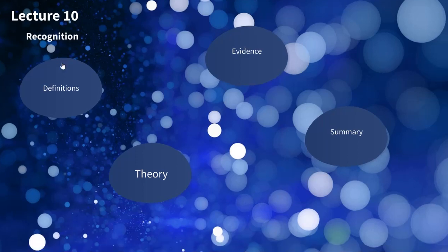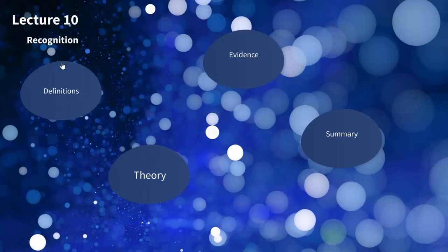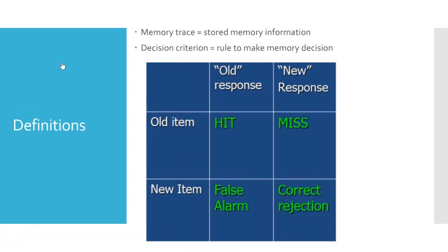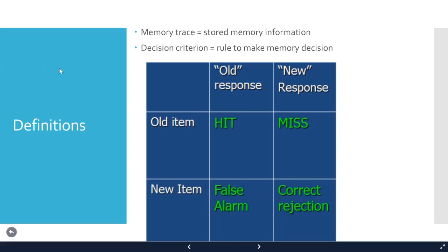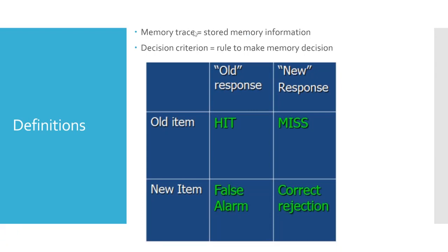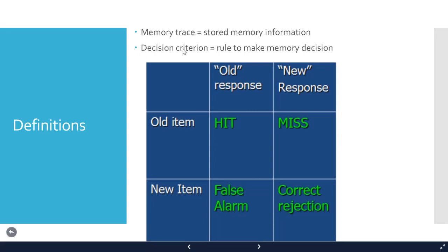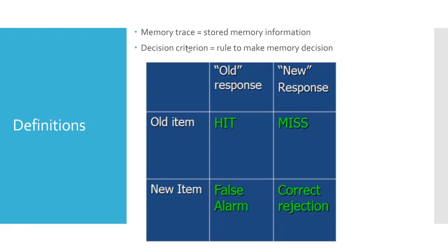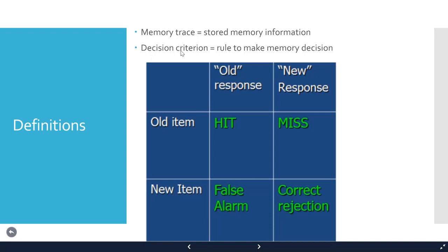We have a couple of definitions within recognition. When considering how we recognize, we have what we call the memory trace — this is whatever information gets stored in memory. We then activate that memory trace and evaluate it using what's called a decision criterion, which is the rule used to make any memory decision.